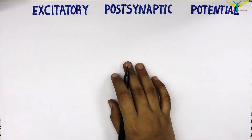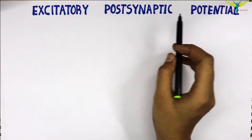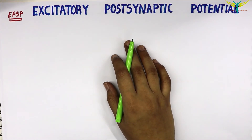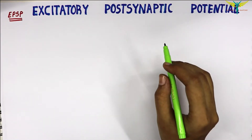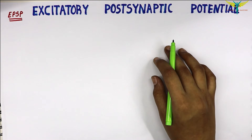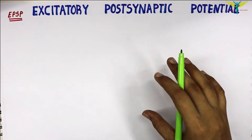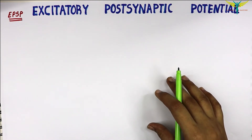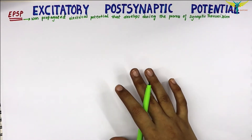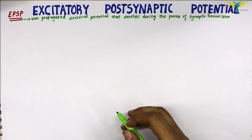In this video, let's learn about the excitatory post-synaptic potential. The excitatory post-synaptic potential is the non-propagated electrical potential that develops during the process of synaptic transmission.